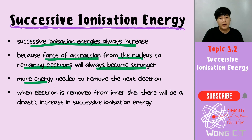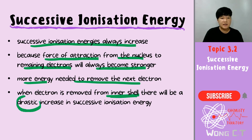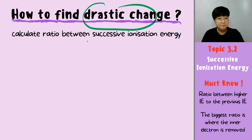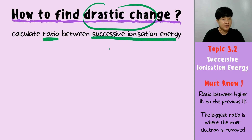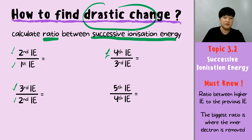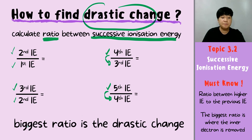When an electron is removed from the inner shell, there will be a drastic increase in successive ionization energy. So how do I know the electron is removed from the inner shell? How do I know there is a drastic change? We are going to calculate the ratio between the successive ionization energies: taking the second IE divided by the first, the third divided by the second, the fourth divided by the third, and the fifth divided by the fourth. The biggest ratio you have calculated will be the drastic change.